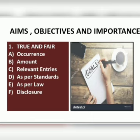Under objectives and aims, the first pointer is true and fair. Vouching helps the auditor to find out whether the entries in the books are true and fair, which is the basic objective of auditing. Vouching provides audit evidence in different respects, such as occurrence. Vouching helps the auditor to find out whether the transaction actually occurred or not.